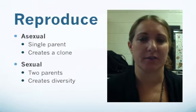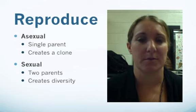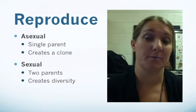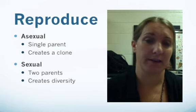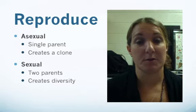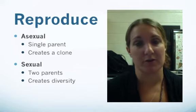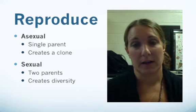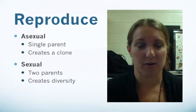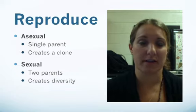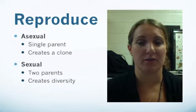In order to be considered living, organisms have to be able to reproduce. We have two different types of reproduction: asexual reproduction and sexual reproduction. Asexual reproduction is with one parent, and you're going to create an exact copy — a clone. Whereas sexual reproduction involves two parents to create one organism, and that's how you get a lot of your diversity.